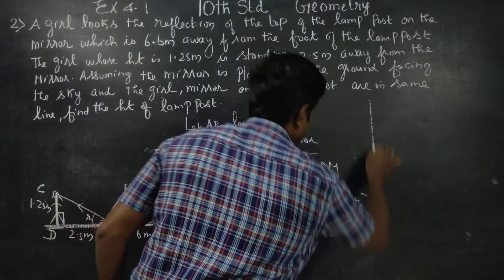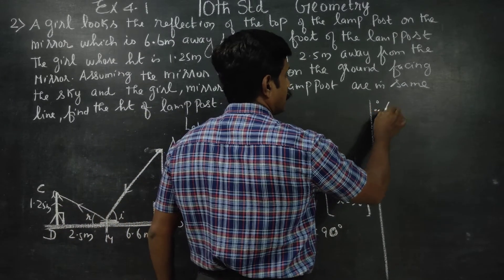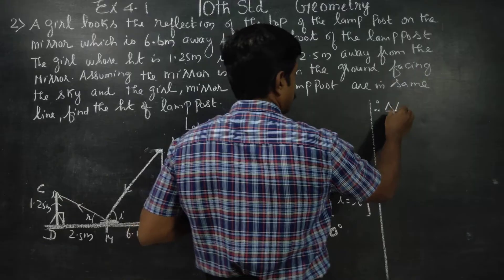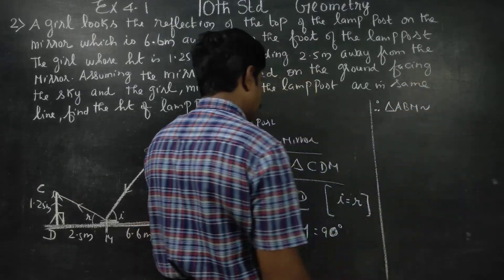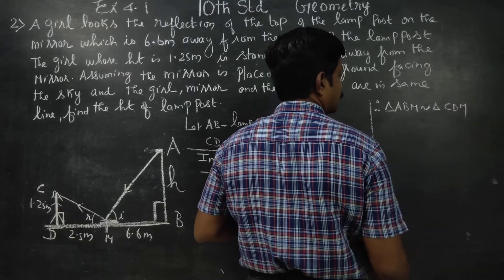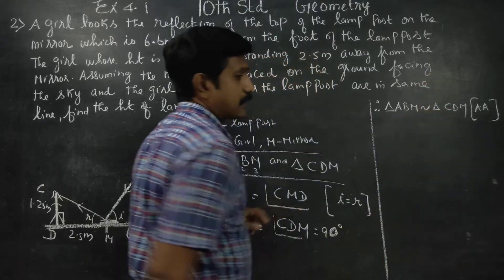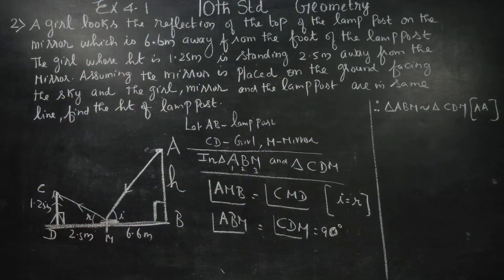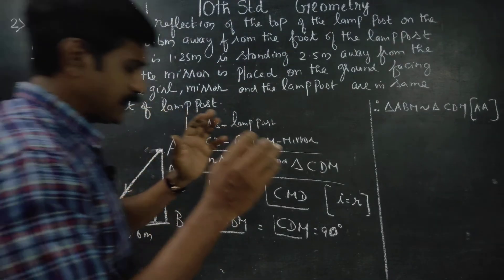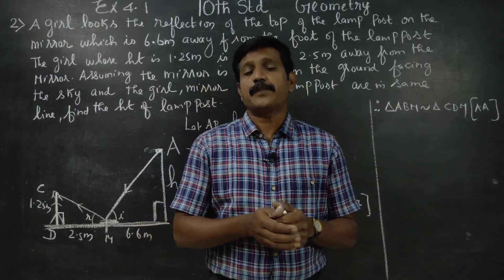Therefore, triangle ABM is similar to triangle CDM by AA criteria. Since the triangles are similar, their corresponding sides are proportional.